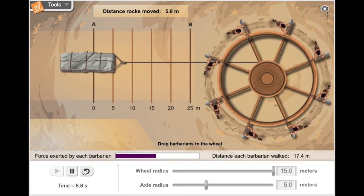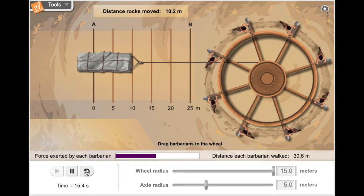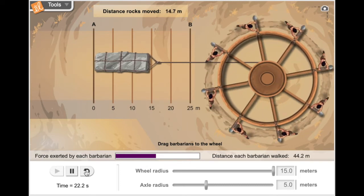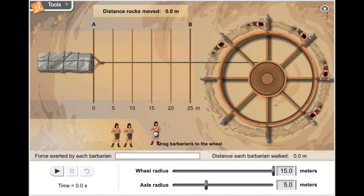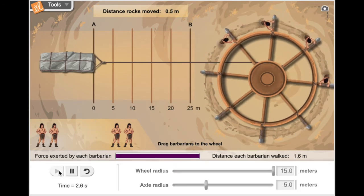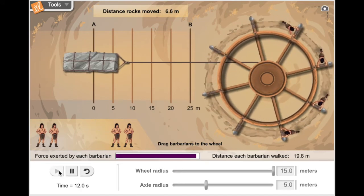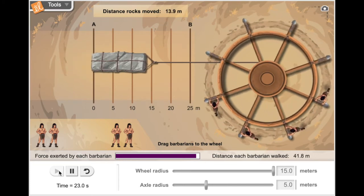Eight barbarians can easily push this, so we want to find the minimum force needed. Four barbarians is the minimum force needed to move this load.